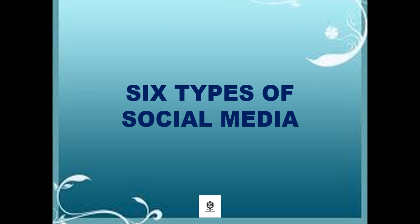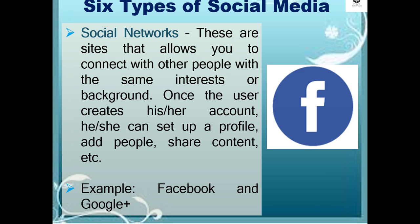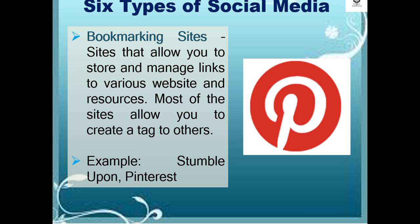Let's proceed to the six types of social media. The first type is social networks — sites that allow you to connect with other people with the same interest or background. Once a user creates an account, he or she can set up a profile, add people, share content, and so on. Examples are Facebook and Google Plus. The second type is bookmarking sites — sites that allow you to store and manage links to various websites and resources, with examples like StumbleUpon and Pinterest.